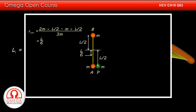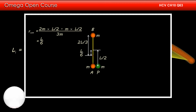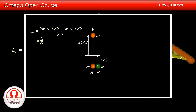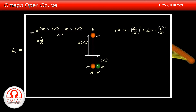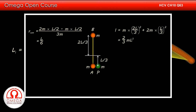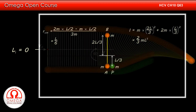The distance of B from the center of mass is L/2 + L/6, or 2L/3. The distance of A and the particle from the center of mass is L/2 − L/6, or L/3. Thus the moment of inertia of the system about the center of mass is M·(2L/3)² + 2M·(L/3)², which simplifies to (2/3)mL².